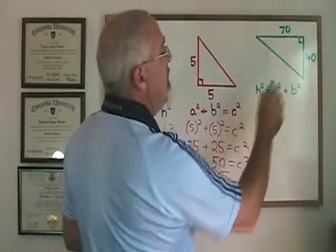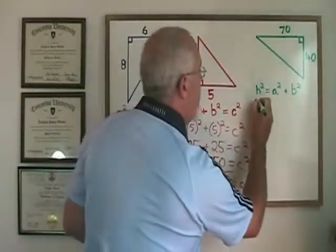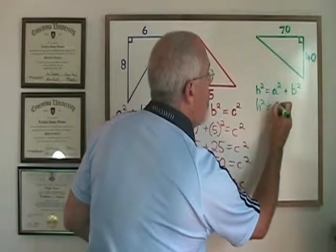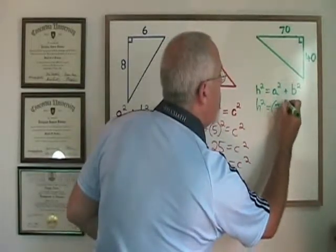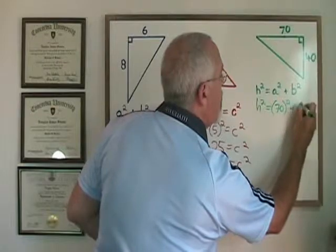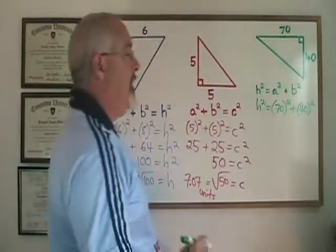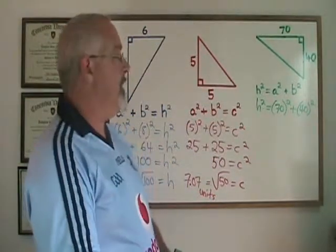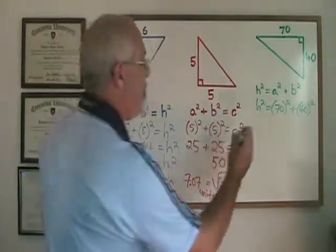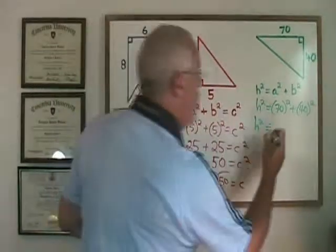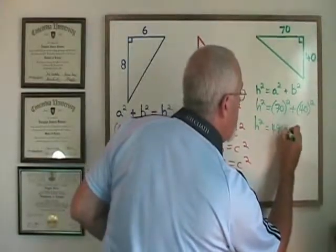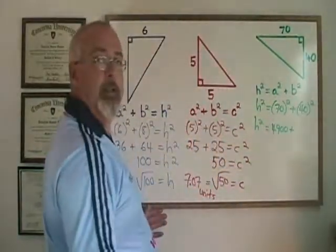Replacing my a and my b with 70 and 40, I get h squared is equal to 70 squared plus 40 squared. 70 squared is 4900 and 40 squared is 1600.